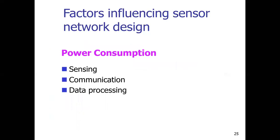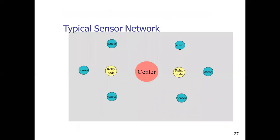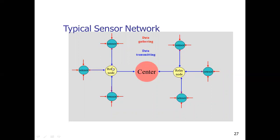The most important factor while deploying any sensor network is power consumption, as power is required for sensing, communicating the sensed data, and data processing. The communication architecture of a sensor network consists of sensor nodes that gather data and forward it to a central controller, which then passes it to the sink node or gateway for further processing. This concludes the brief introduction to wireless sensor networks; the next lecture will cover the protocol architecture of wireless sensor networks.